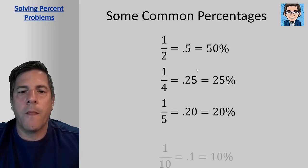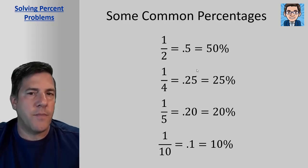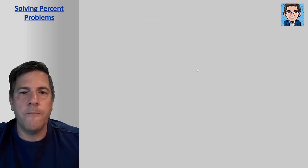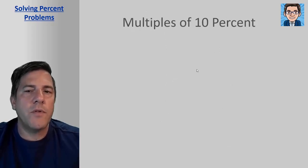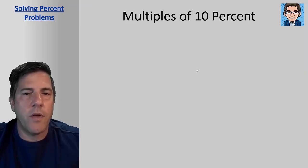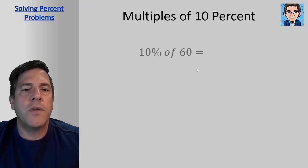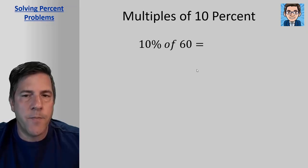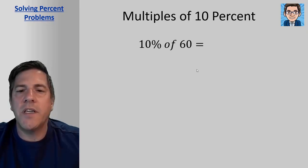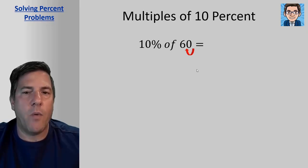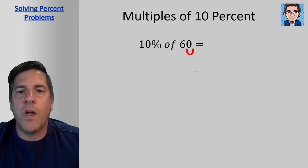Now multiples of 10% are easy to work with. A lot of times we can do these in our head. So if we're going to do 10% of 60, in order to do 10%, we just need to move the decimal point back one because we're taking one-tenth. Ten percent is the same as one-tenth. So that's going to be 6.